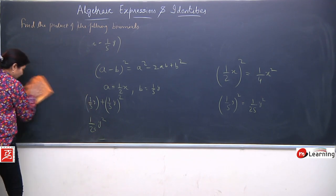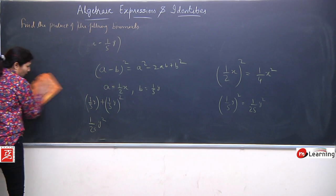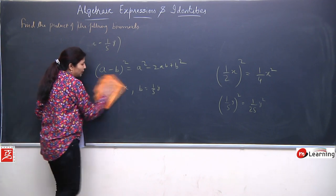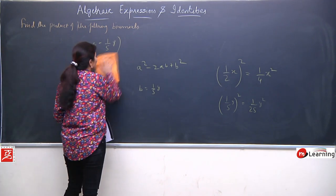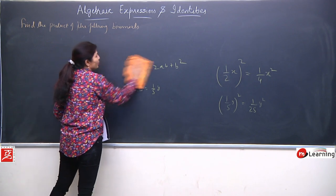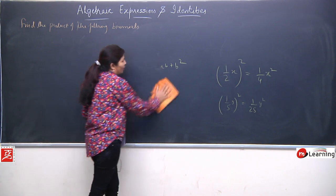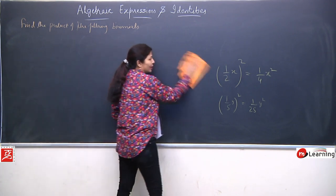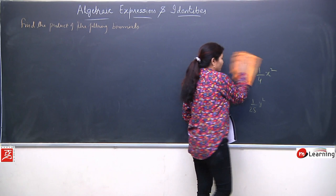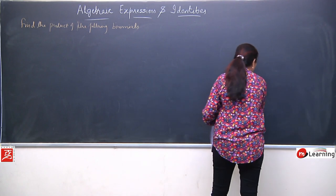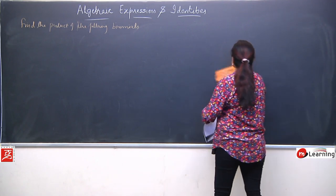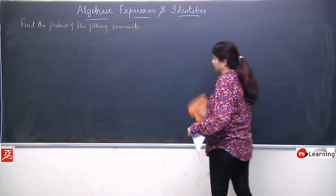Now we have practiced two identities. Our third identity is: (a + b)(a - b) = a² - b². Now I will take one example based on the third identity.